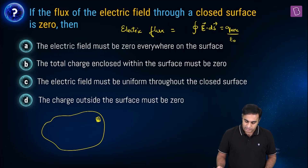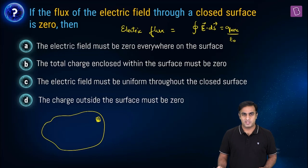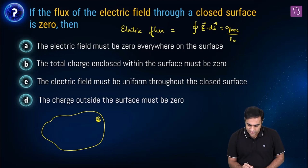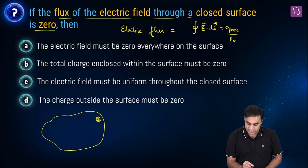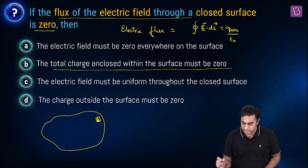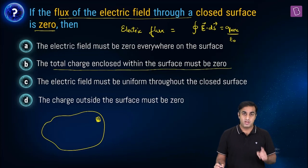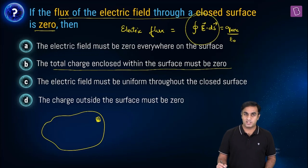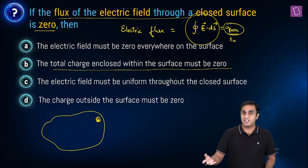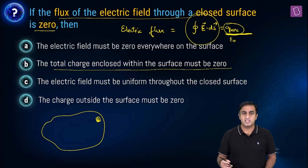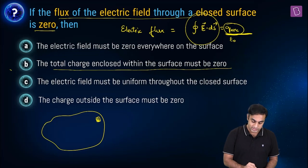Now look at the options. The electric field must be zero everywhere on the surface. Second: the total charge enclosed within the surface must be equal to zero. Let's take up the second one first. For the flux of the electric field through the closed surface to be zero, the electric flux can become zero only when the right-hand side is also zero. In that case, Q enclosed — the net charge enclosed by this closed surface — must be zero. This option is obviously correct.